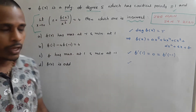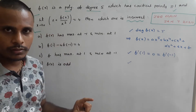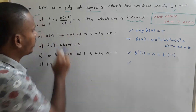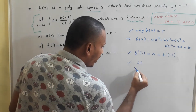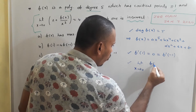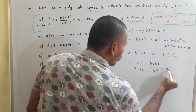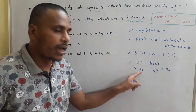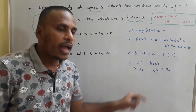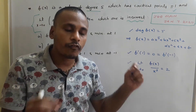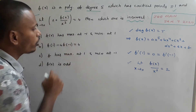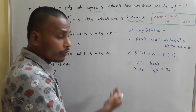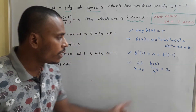Since 2 is a constant and limits won't affect constant values, we send 2 to the other side. So the condition becomes: limit as x tends to 0 of f(x)/x³ = 2, because 4 − 2 = 2. We now have three restrictions to find the polynomial f(x).